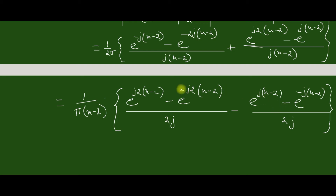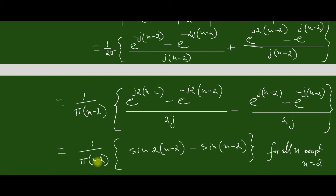So these two terms can be replaced with the sin(θ) format. This gives hd(n) equal to sin(2(n−2)) minus sin(n−2) all over π(n−2), for all n except n equal to 2. When n equals 2, the denominator becomes 0 and the function is indeterminate.